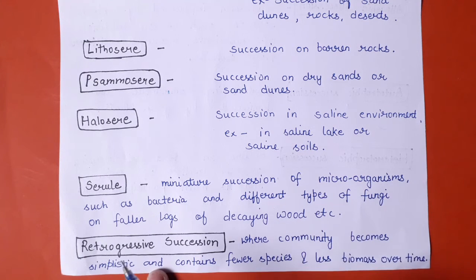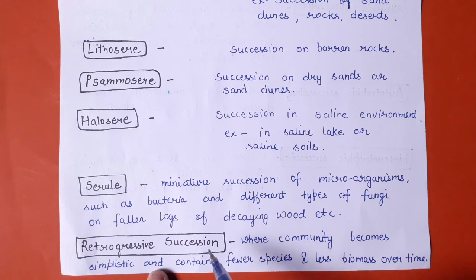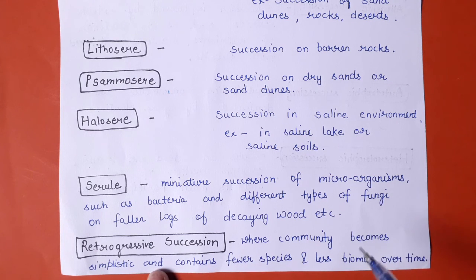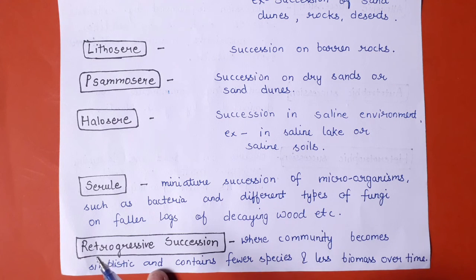Retrogressive succession is a type in which the community becomes simpler as it moves toward the climax — having fewer species and lesser biomass. So it is a kind of regression rather than progression in the successional series.